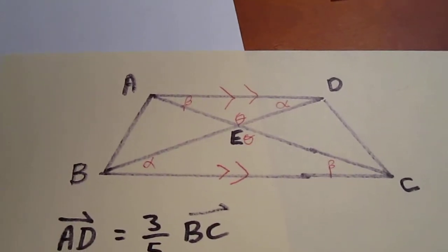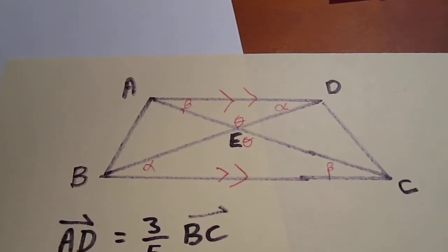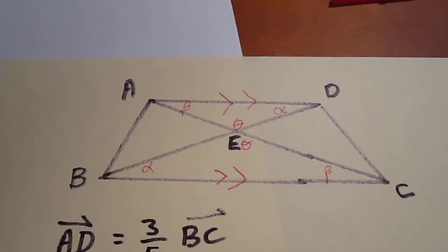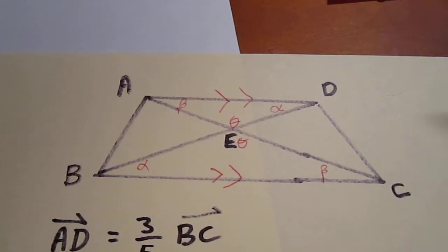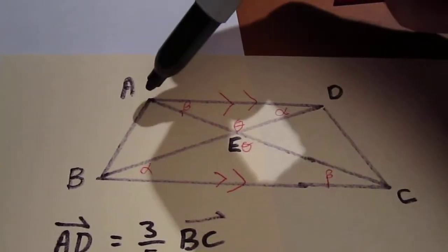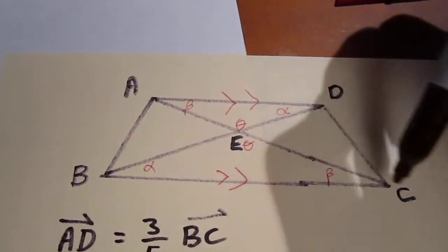What we're going to do is write down the one linear combination of vectors in those directions that we know. Specifically, what I mean is we're going to write down that AC is equal to AB plus BC.